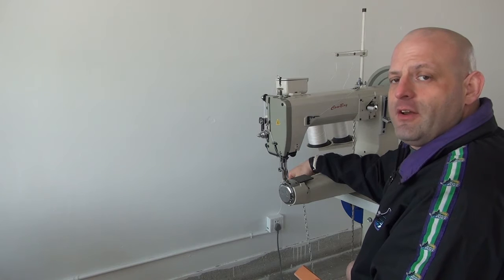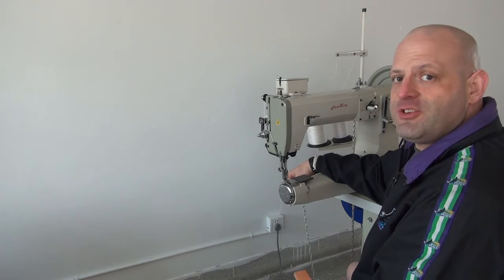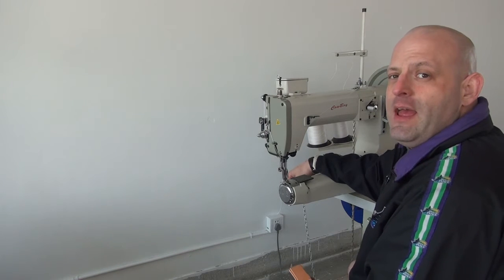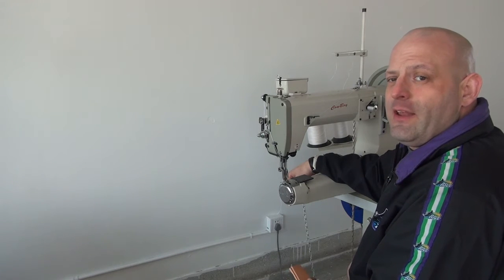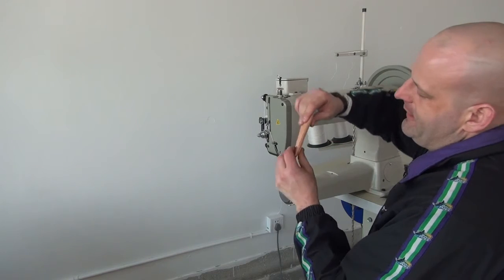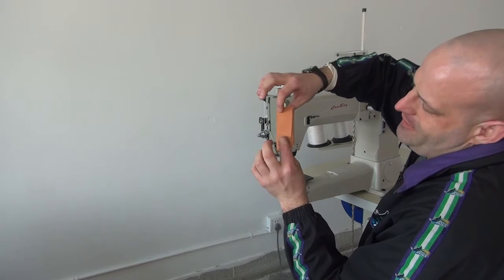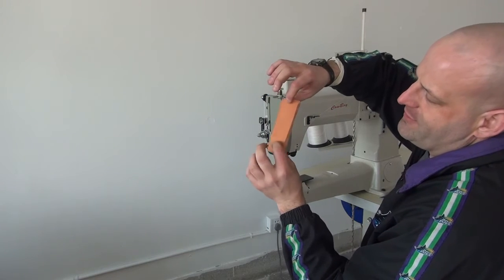Our CB4500 sewing machine is our flagship sewing machine. It's the very best sewing machine that we sell for sewing heavy duty leather, saddlery and holster products. So I'm going to demonstrate the machine by sewing through two layers of approximately 10 to 12 ounce saddle skirting leather.